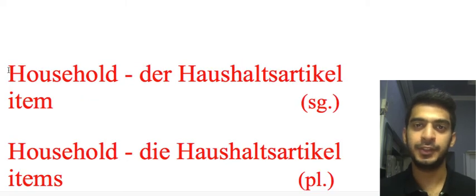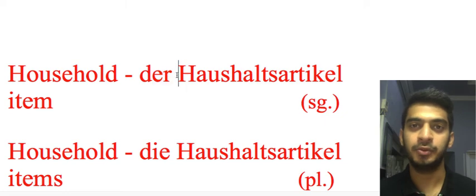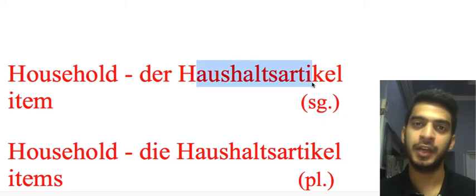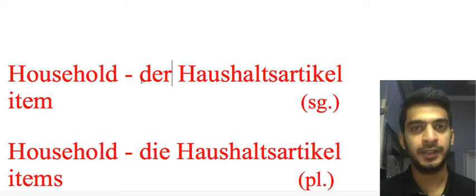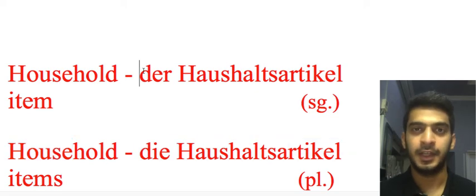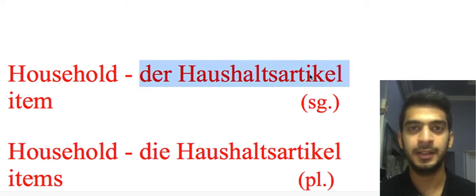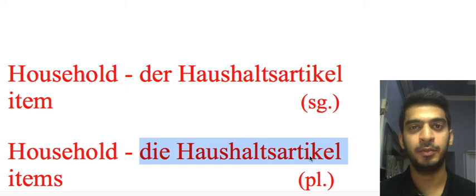First we have the translation for the word 'household item'. The word is 'der Haushaltsartikel' — singular form. 'Der' is the article for the word 'Haushaltsartikel'. In German, every noun has an article, so we write the article first, then the noun. Plural: 'die Haushaltsartikel' — both singular and plural forms are completely the same.